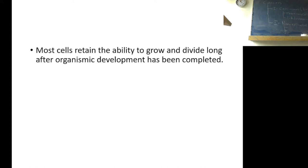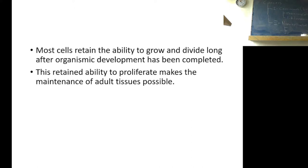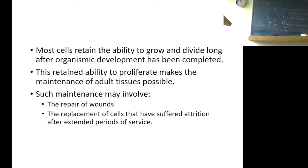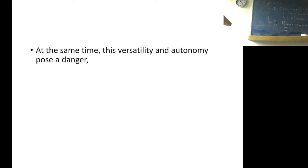The cells also know how to divide. This retained ability to proliferate makes the maintenance of adult tissues possible. Why do we need it? Once we become adults, why do we need to divide our cells? That is necessary for maintenance of our body and repair the wounds. This maintenance means repair of the wounds and replacement of cells that have suffered attrition after extended period of service.